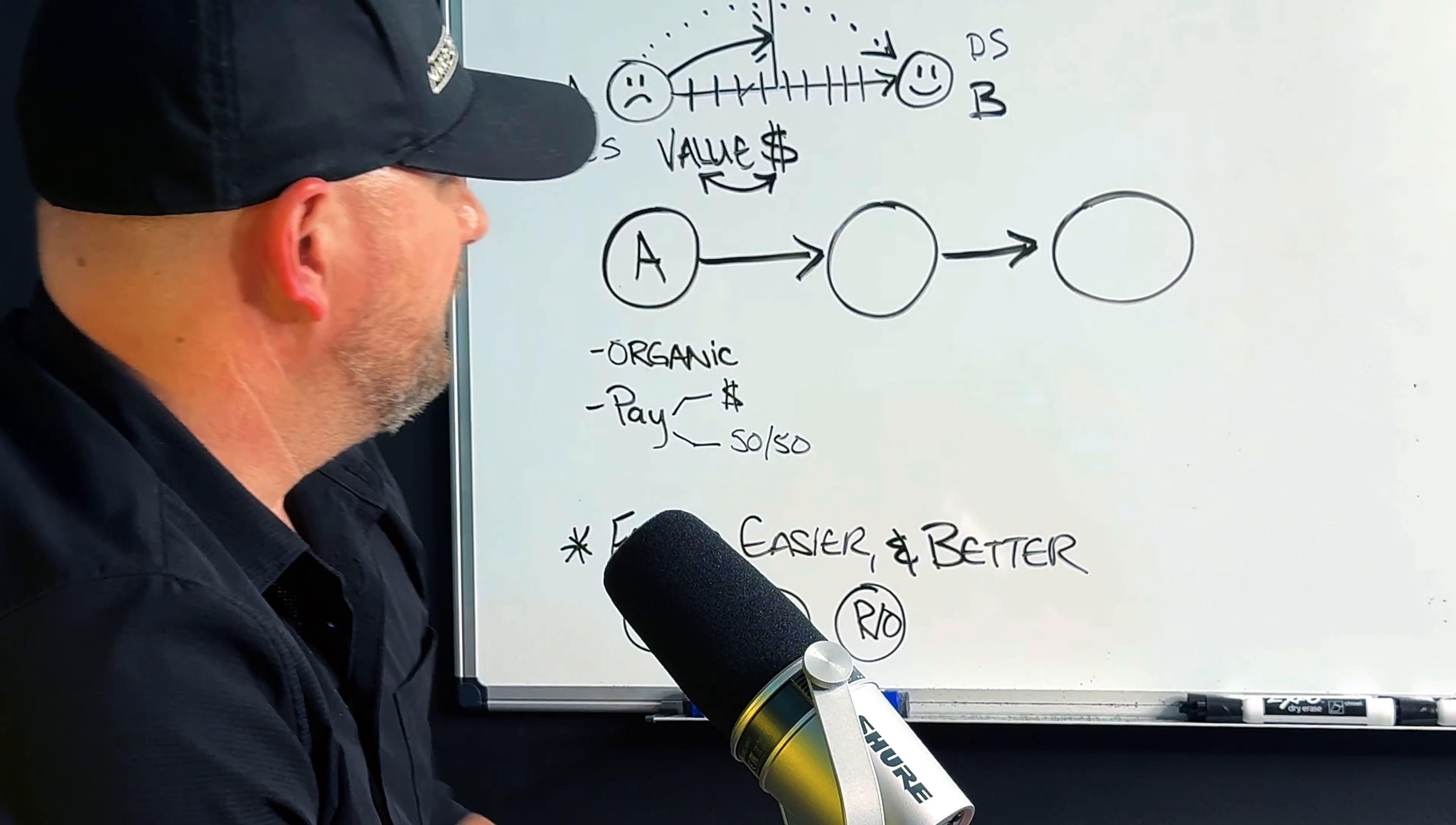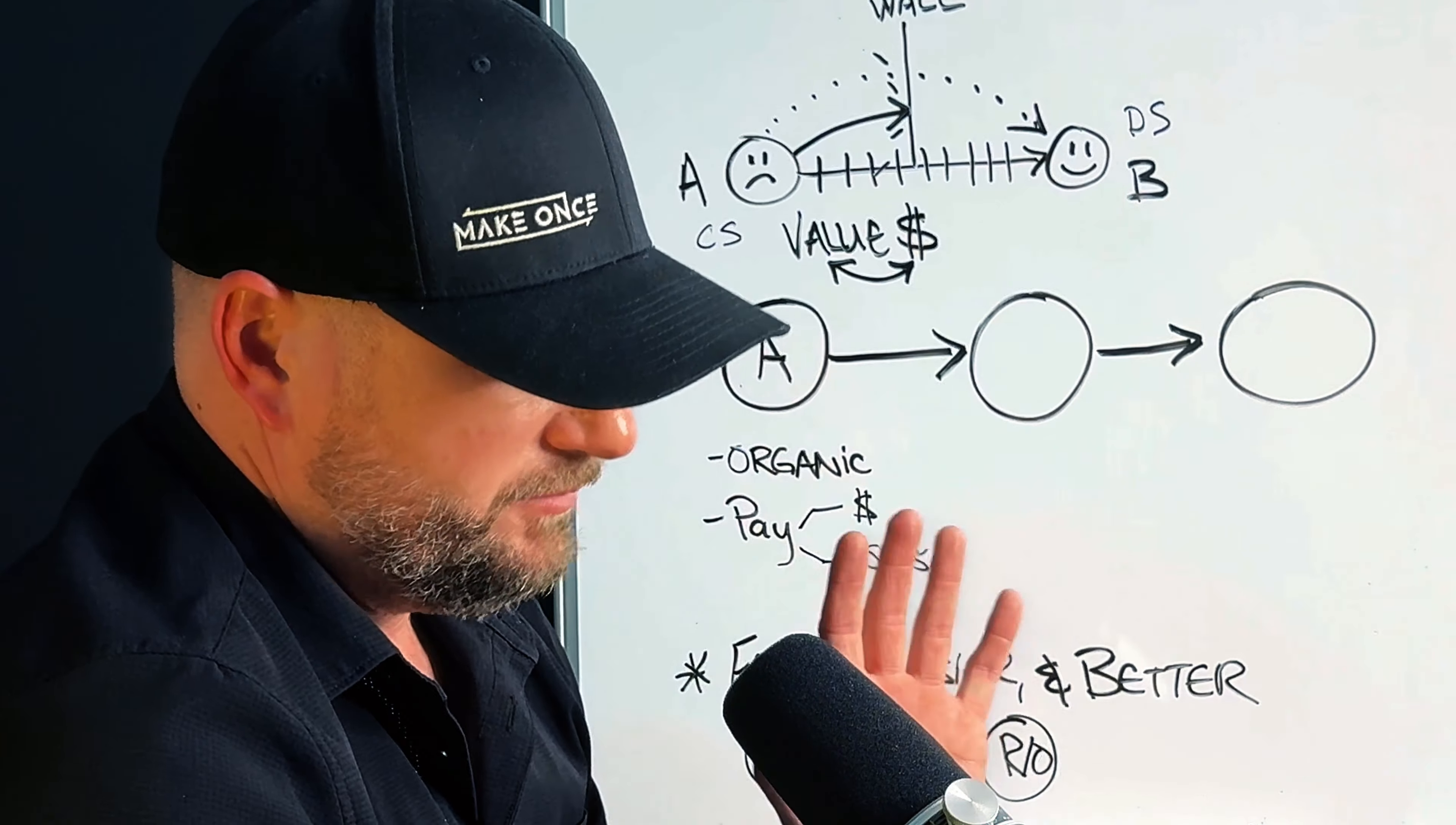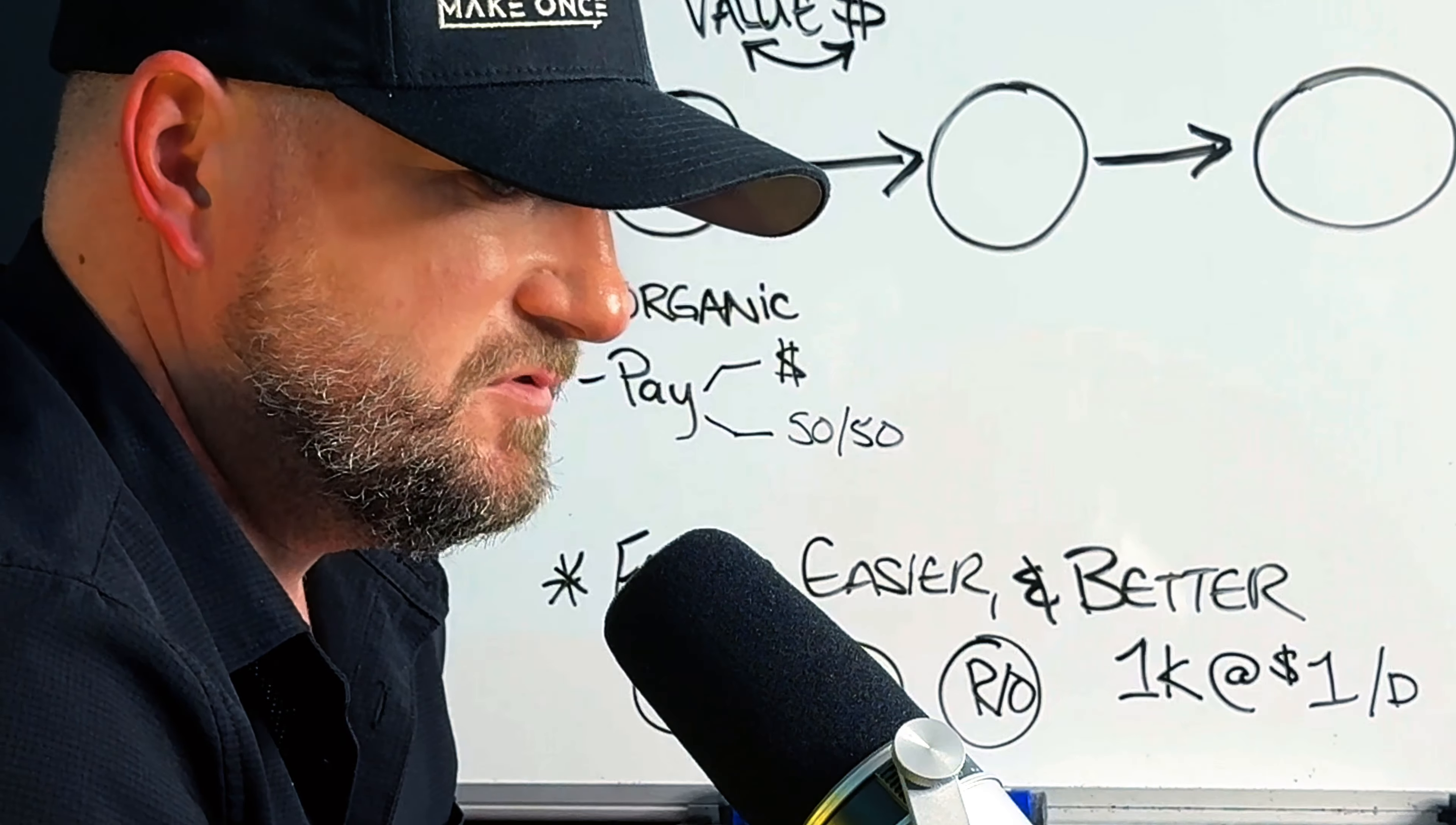Inside of our profit loop model system, you're attracting people by giving them free value. You're showing them that you can actually help them by actually helping them. You're going to prove to them that you're worthy of being followed. People will pay you to expedite the process. What I like to always think about is this rule of 1,000. 1,000 people at even a dollar a day keeps most of the things you're struggling with away.